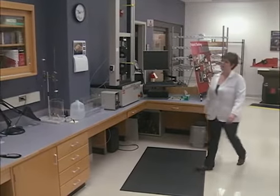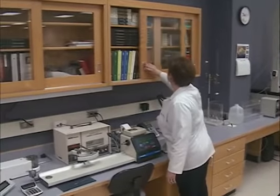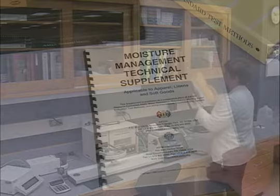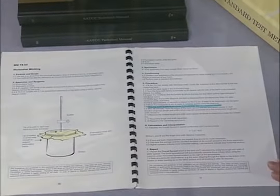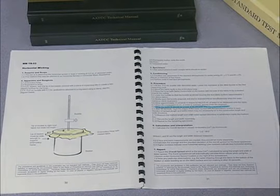An existing AATCC test method is integral to judging whether a fabric has one major attribute of moisture management: absorbency. In fact, one of the new moisture management test methods calls for a determination of whether a fabric meets a prescribed absorbency threshold as measured by AATCC Test Method 79.